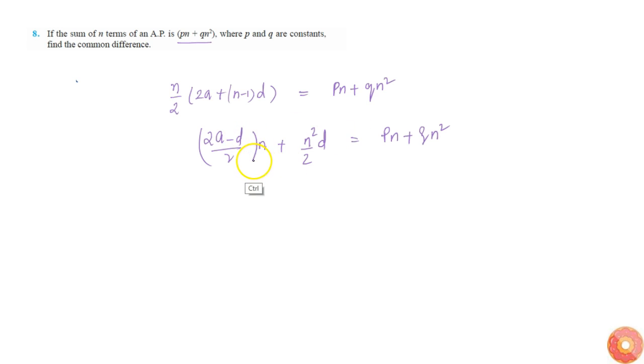From this we get p is equal to 2a minus d by 2, so which implies 2a minus d is equal to 2p.